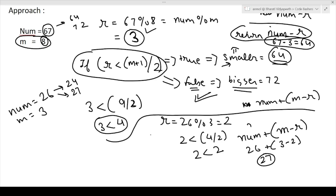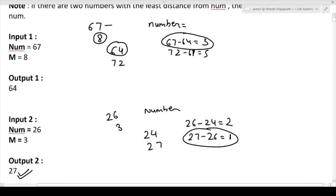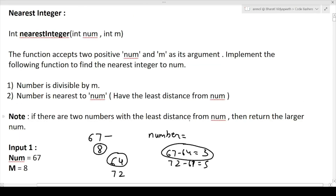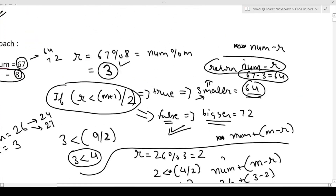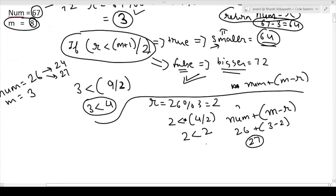You might wonder why we use strict less than and not less than or equal to. The question states: if there are two numbers with equal distance from num, return the larger number. When r equals (m + 1) / 2, both candidates are equidistant, so we should return the larger number — that's why the condition is strictly less than, and the equal case falls through to return the bigger number.